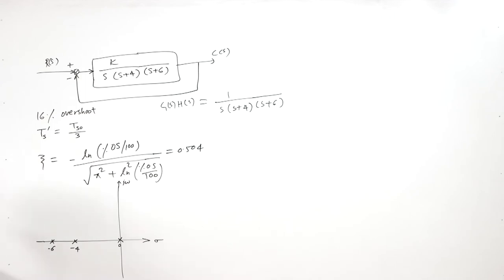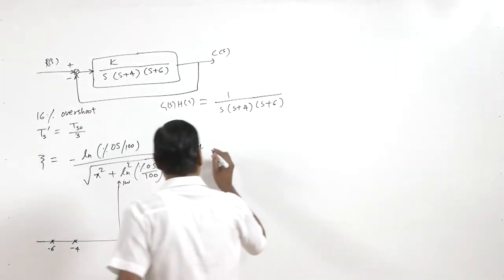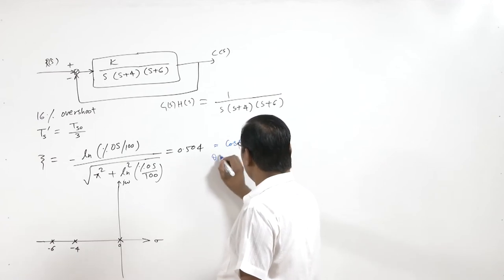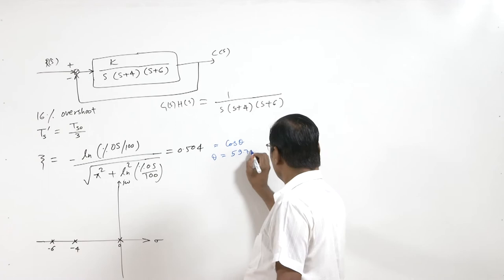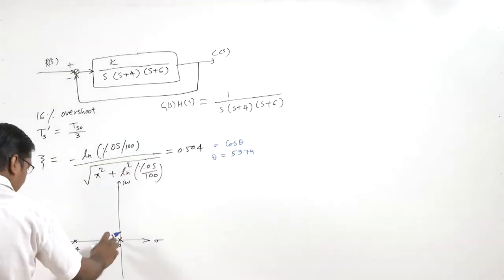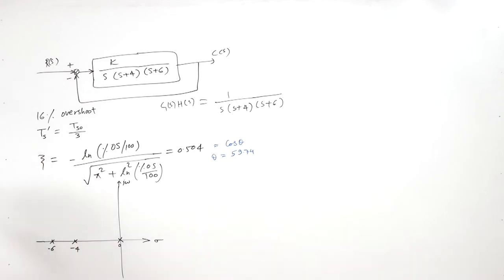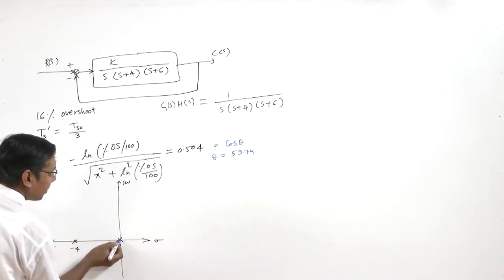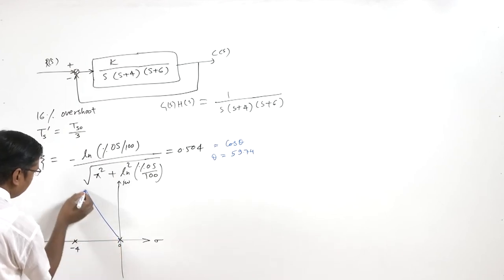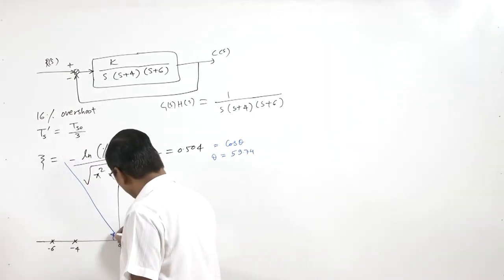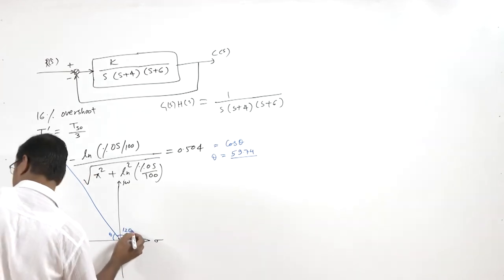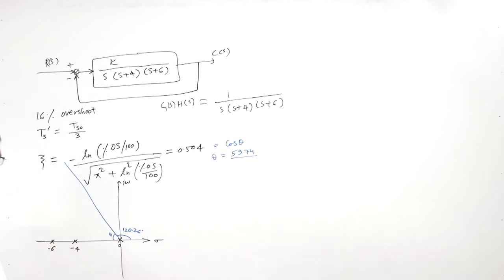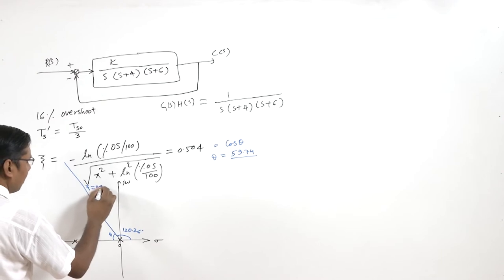We can find the angle theta since damping equals cos(theta). So theta = 59.74 degrees. This angle is measured clockwise from the real axis, giving us about 60 degrees for this line. The angle on the other side is 120.26 degrees, which is 180 minus theta. This line represents the damping line for zeta = 0.504.